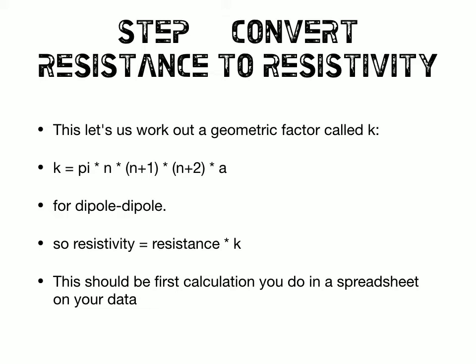That's the spacing between electrodes we wrote down in our field notes. Times n plus 1 times n plus 2 times a, which is the electrode spacing in our survey, which was just 10 metres for all the time.